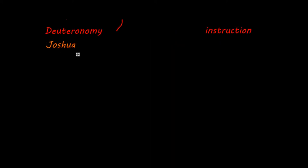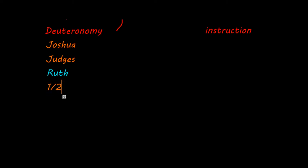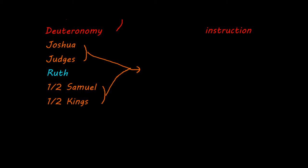Then we go to the second part of the Hebrew Bible, which starts with Joshua and Judges. Then we get the book of Ruth, which is slightly different in how it presents itself — it doesn't really fit in, though it does fit the timeline. Then we go on with 1st and 2nd Samuel and 1st and 2nd Kings. These six books together are often called the Deuteronomistic History, because they have a lot in common with the book of Deuteronomy and together they form a coherent story.